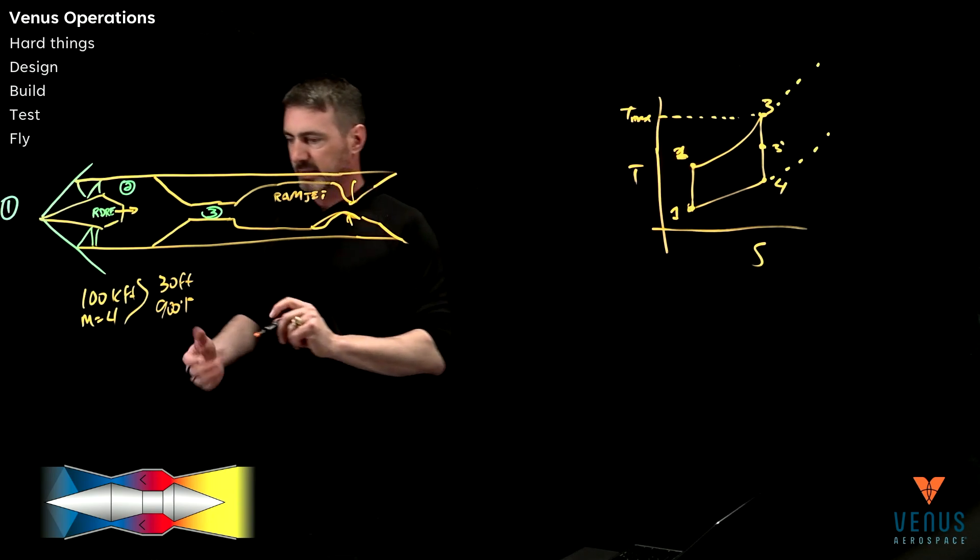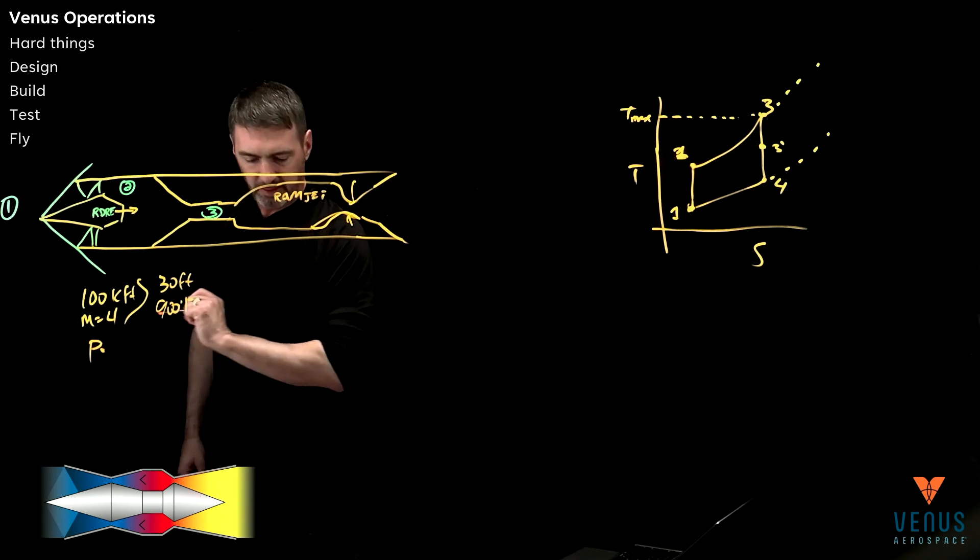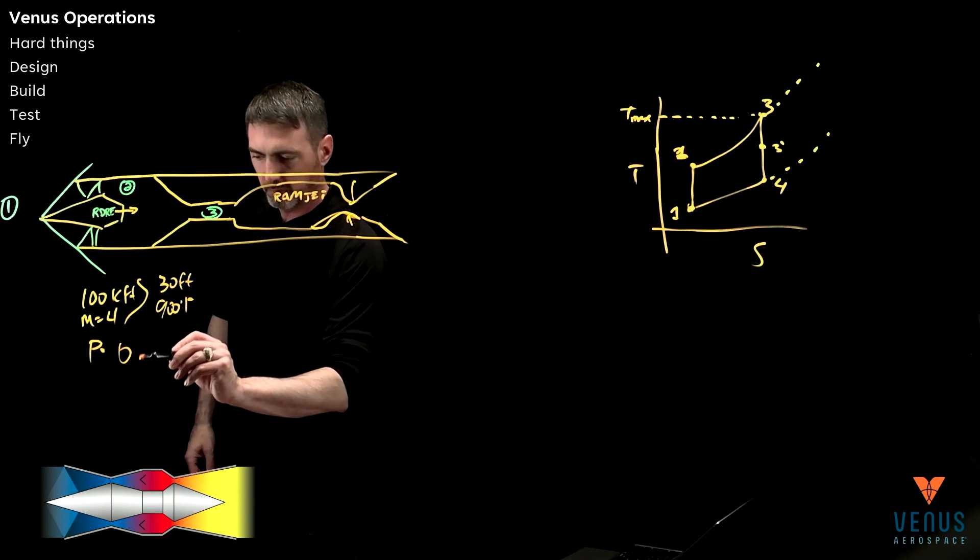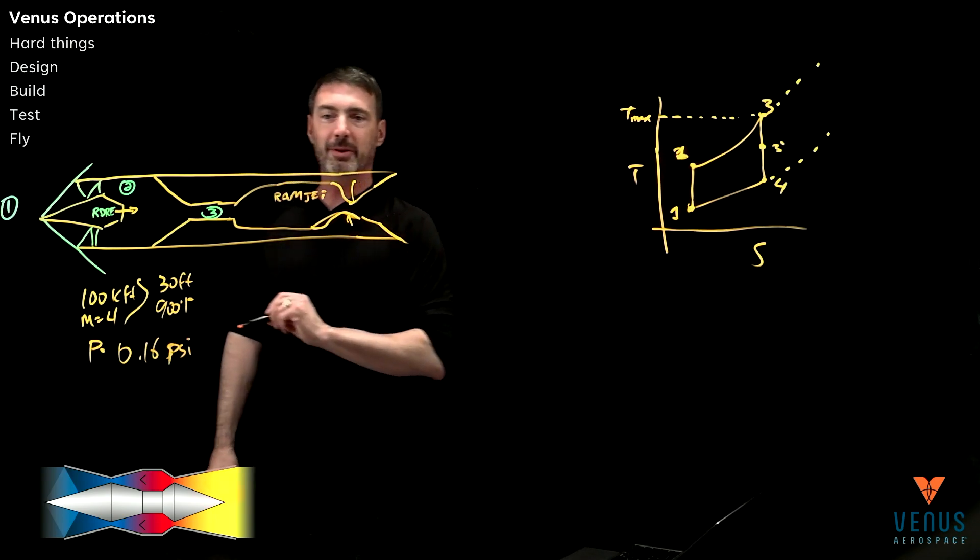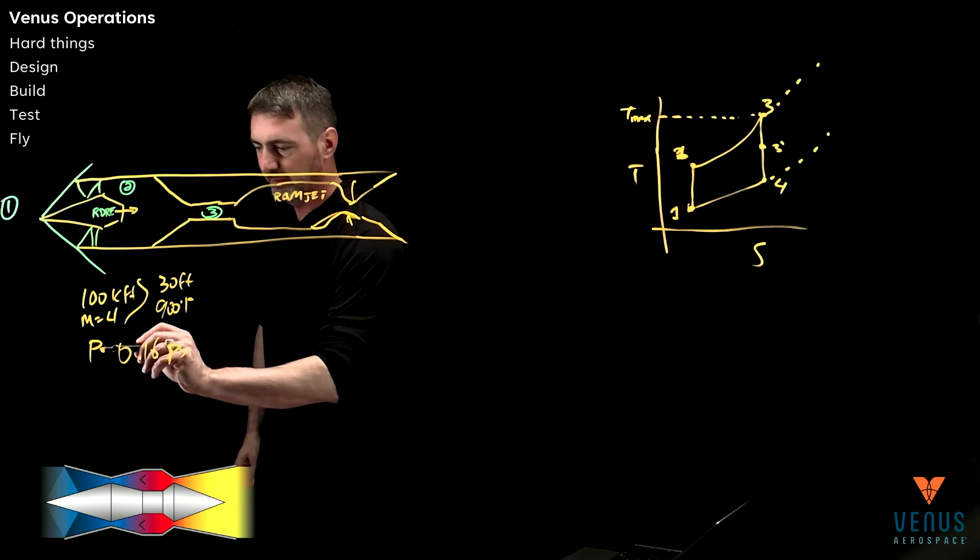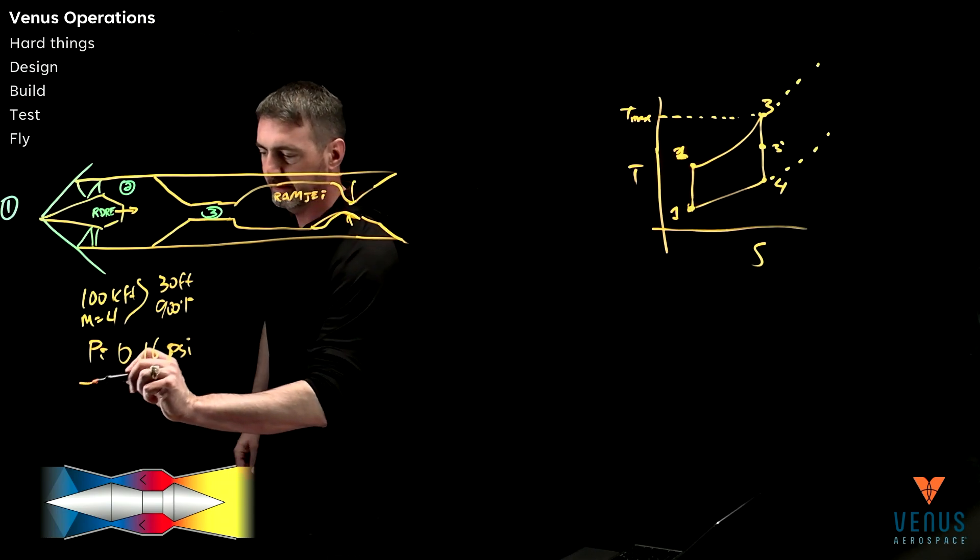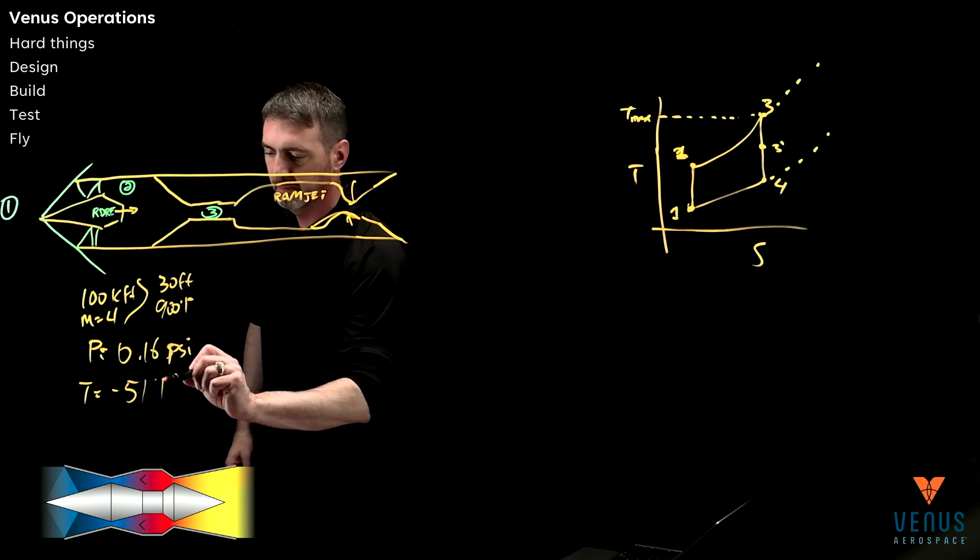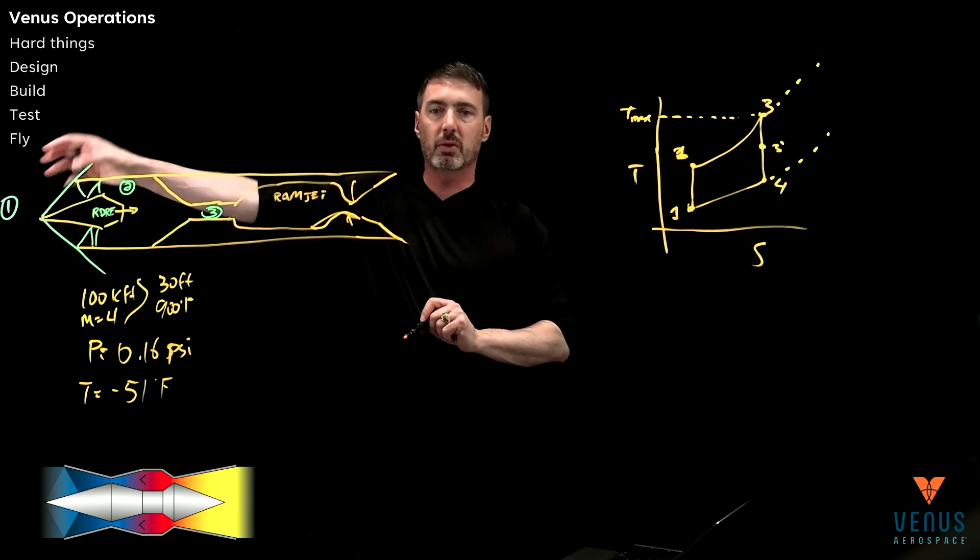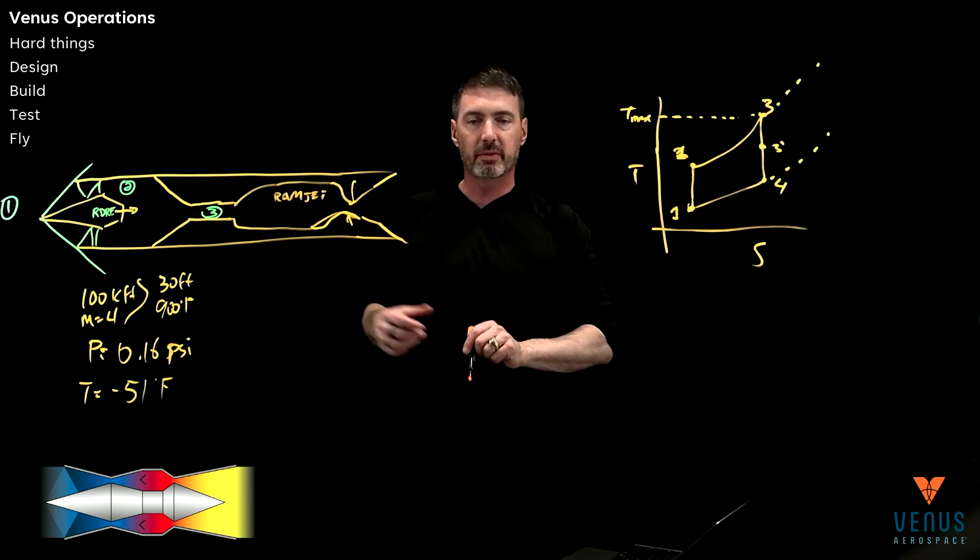Okay. And the pressures at that condition, the pressure in the atmosphere is pretty low, 0.16 psi. I'm going to do this only in English units. You can do the conversion to Pascal. And then the temperature is minus 51 Fahrenheit. So the air is cold, state one. And then it's coming through these shocks.